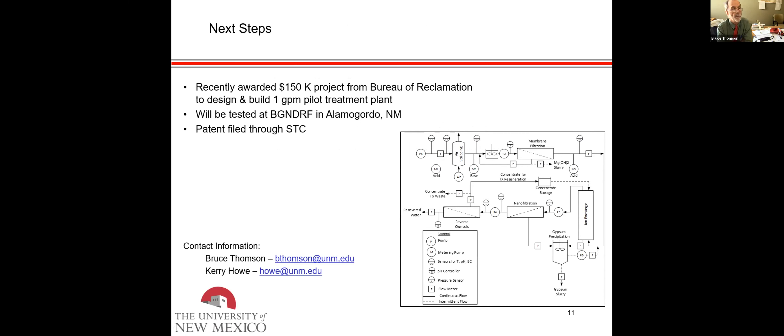The next step is that we were recently awarded a $150,000 project from the Bureau of Reclamation to design and build a one-gallon-per-minute pilot demonstration plant. We got the funding about the 1st of July, so we're starting work on that. Part of the contract is that we will test this at the Brackish Groundwater National Desalination Research Facility in Alamogordo. Hopefully testing will begin next summer. This one-gallon-per-minute pilot plant is what the reverse osmosis manufacturing company wants to see.